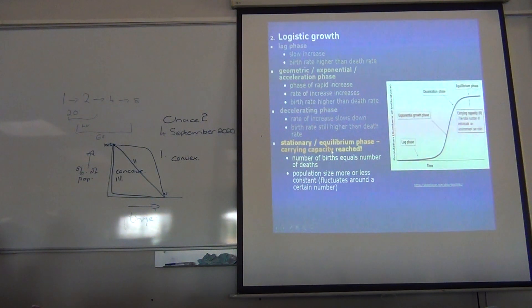Stationary or equilibrium phase. Carrying capacity has been reached. Number of deaths equals the number of births. Population size is more or less constant. Fluctuates around a certain number. So, please know how to spell stationary.